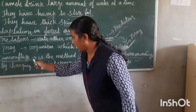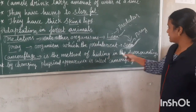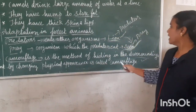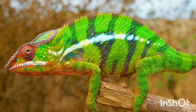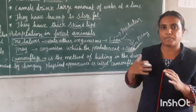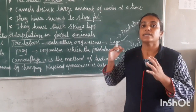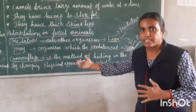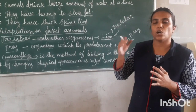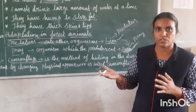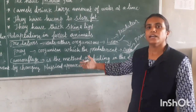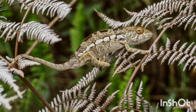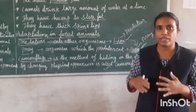The next adaptation is camouflage. Camouflage is the method of hiding in the surroundings by changing physical appearance. The best example is chameleon. When threatened by predators, the chameleon changes its body color according to its surroundings. If sitting on leaves, it turns green; if sitting on a tree, it turns brown, so enemies cannot easily identify it.